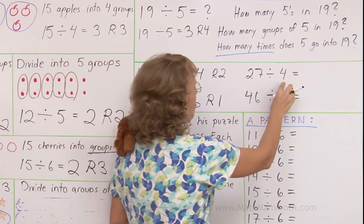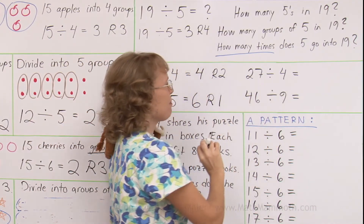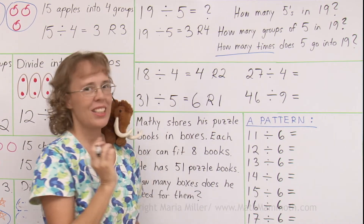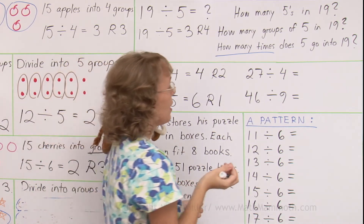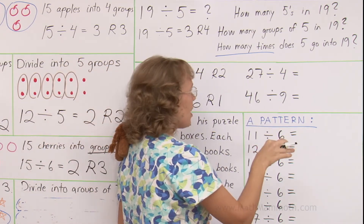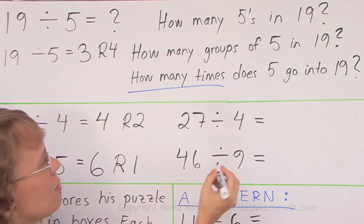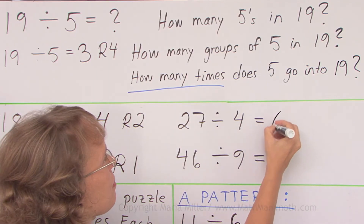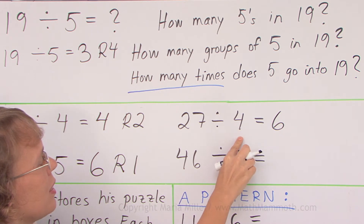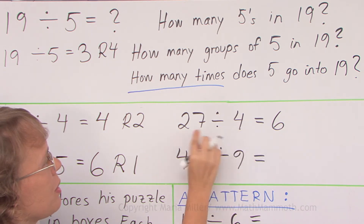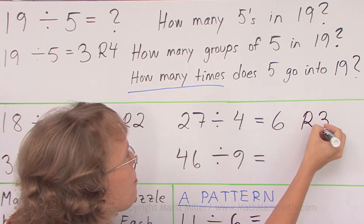How many times does 4 go into 27? 6 times 4 is 24. And then 7 times 4 is too much — it is 28. So 6 times. 6 times 4 is 24, and then the difference between 24 and 27 is 3.